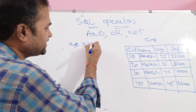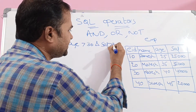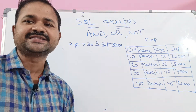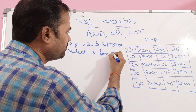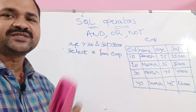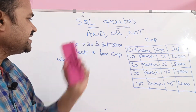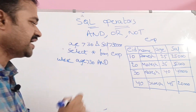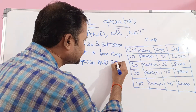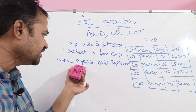Let's use a query that displays the records when Age is greater than 30 AND Salary is greater than 30,000. The query is: SELECT * FROM EMP WHERE Age > 30 AND Sal > 30000. It displays records only when both these conditions are true.